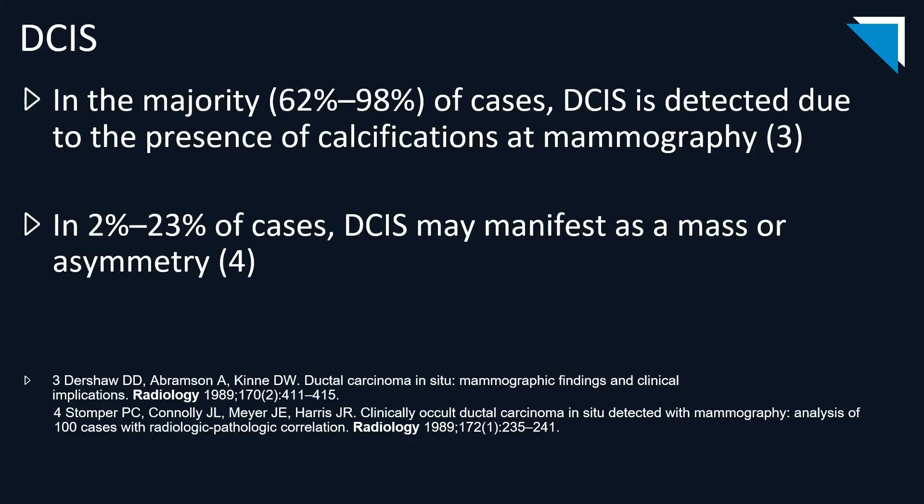For DCIS, in the majority of cases — about 62 to 98%, depending on which study you read — DCIS is detected due to the presence of calcifications on mammogram. In 2 to 23% of cases, DCIS can manifest as a mass or an asymmetry. In this case, luckily, the lesion did have both. So this was a very good call.